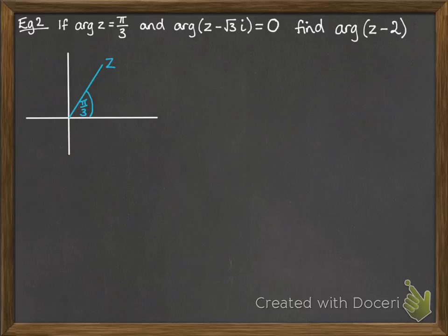Now the argument of z minus √3i is 0. That means the line from √3i on the imaginary axis towards z. And it makes an argument of 0, which means that it is horizontal. It has 0 degrees between that line and the line that runs parallel to the real axis. So we get a 90 degree angle there.